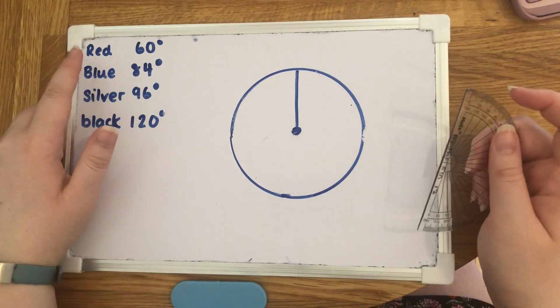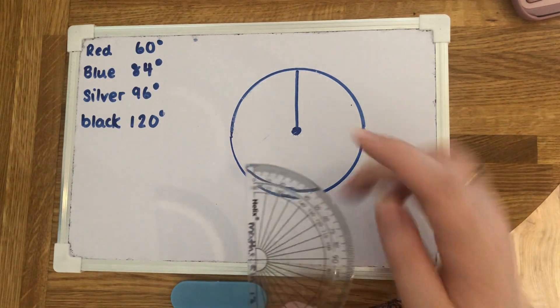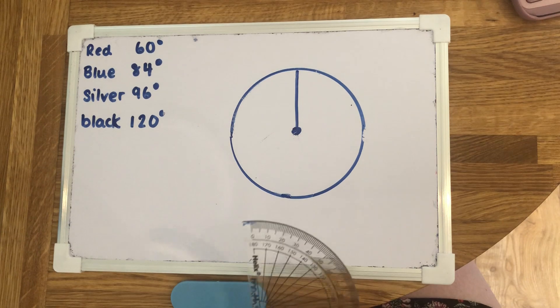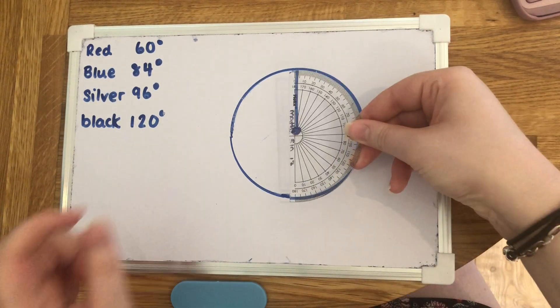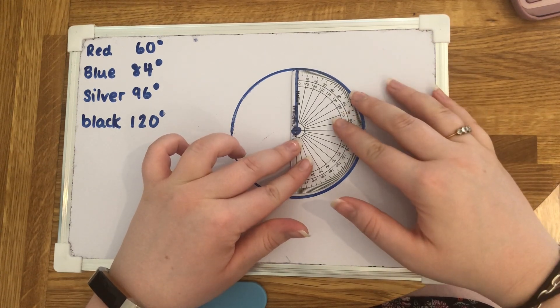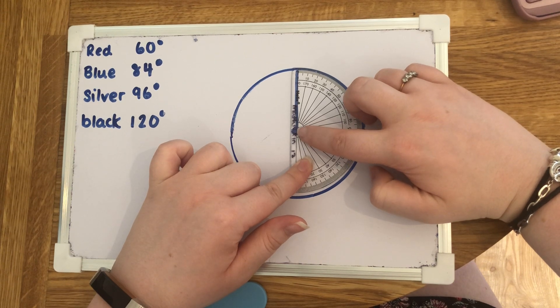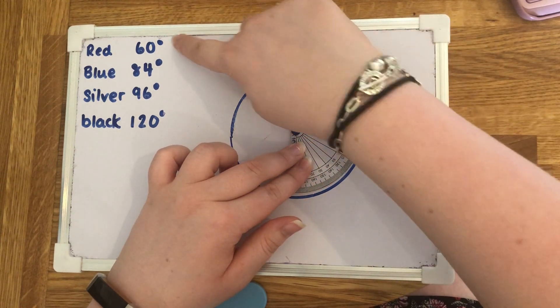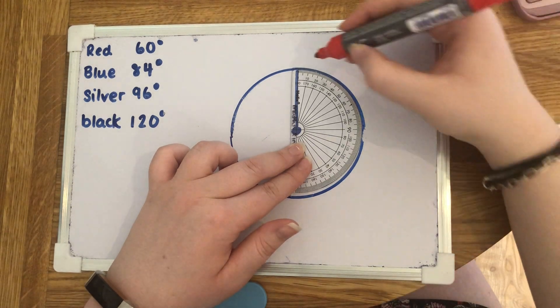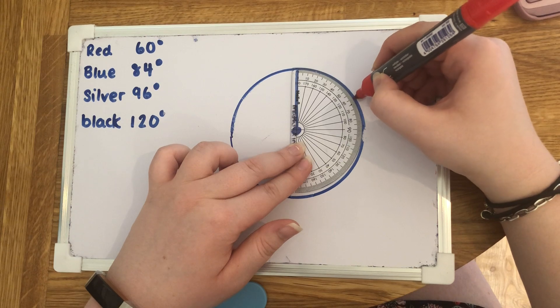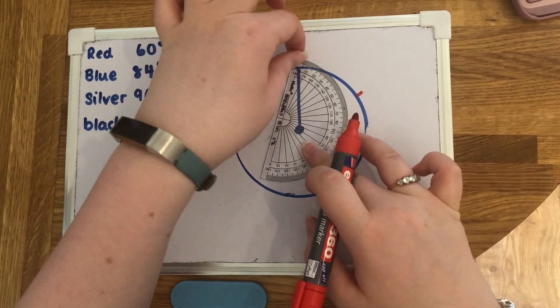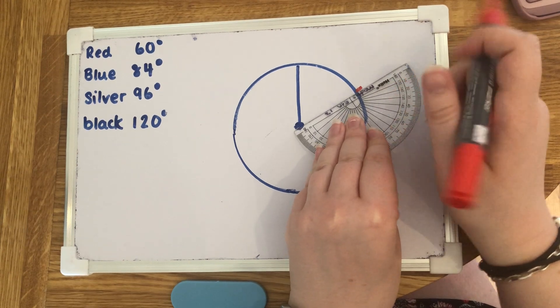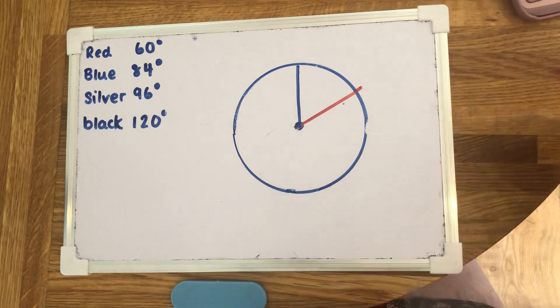I have drawn this line here just because this is the line that we're going to start measuring from. First one is red which is 60 degrees. I'm going to make sure that the line I've drawn here is in line with the zero on the outside. We're not going to be looking at the inside numbers at all, just the outside numbers. The cross on the protractor's in the middle of the circle and this line is where zero is. Red was 60 so I'm going to look at outside numbers and find where 60 is, which is here. I'm just going to draw a little mark there.